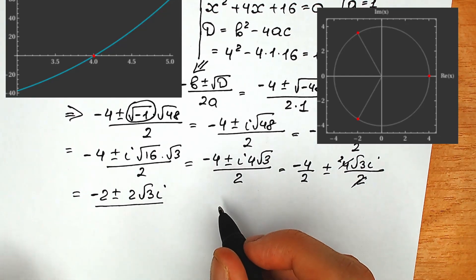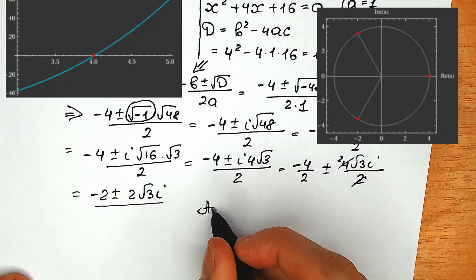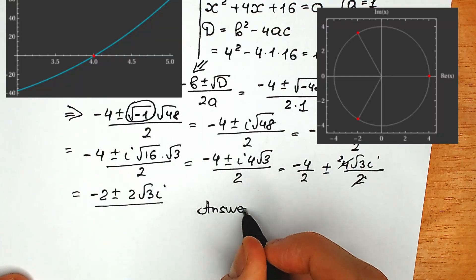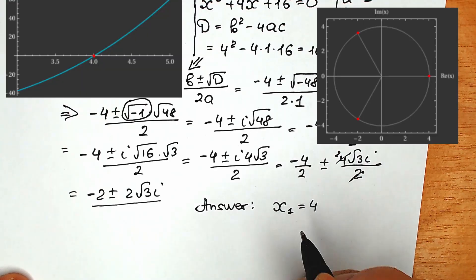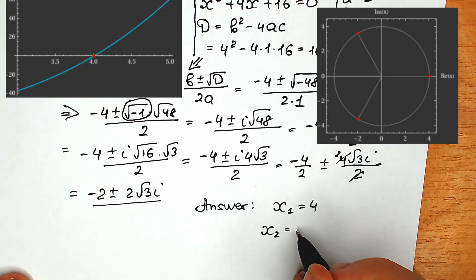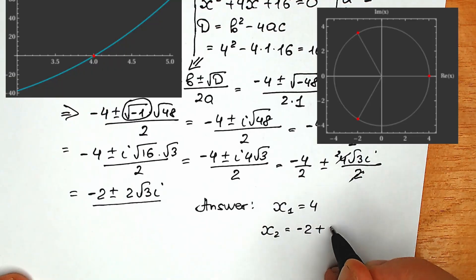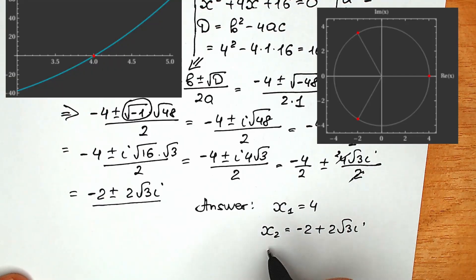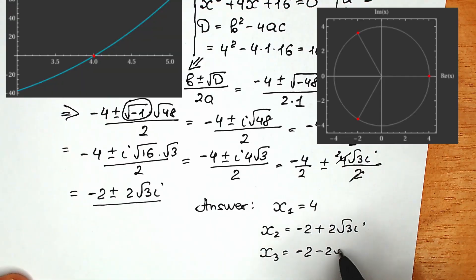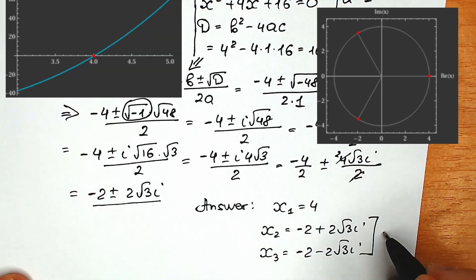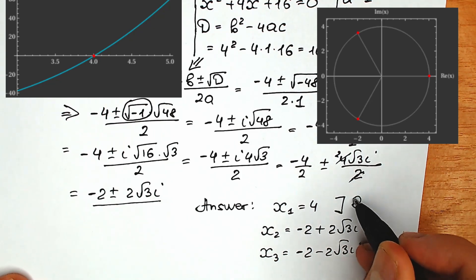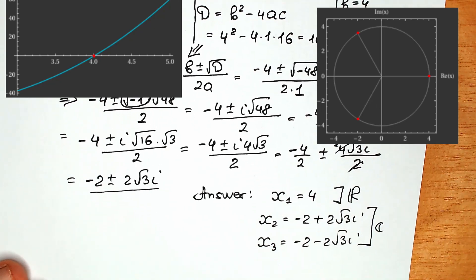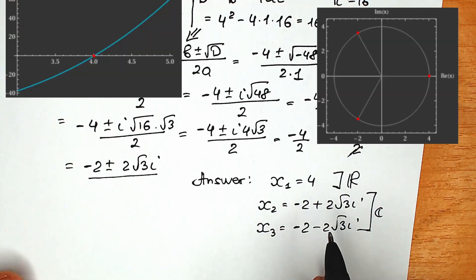So our final answer: x₁ equals 4. x₂ equals minus 2 plus 2i times square root of 3. And x₃ equals minus 2 minus 2i times square root of 3. These are our complex roots, and x₁ is our real number root.